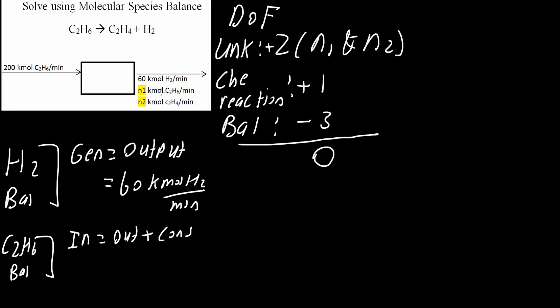That's what we're trying to find: C2H6 as an output. We have going in 200 kilomoles of C2H6 per minute. Output we do not know, which is N1. So output is N1 plus consumption.